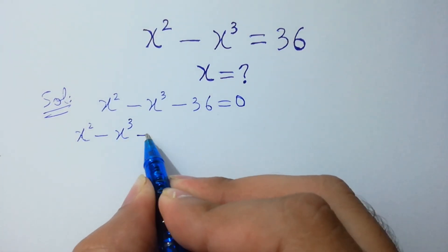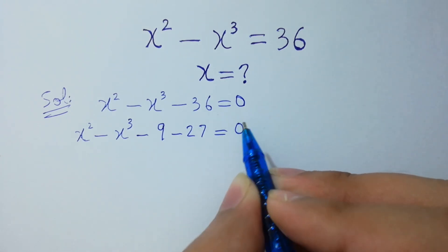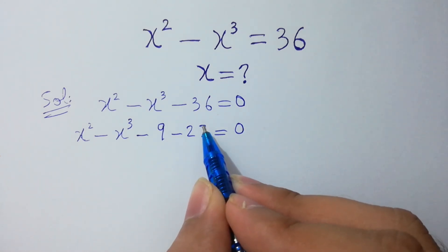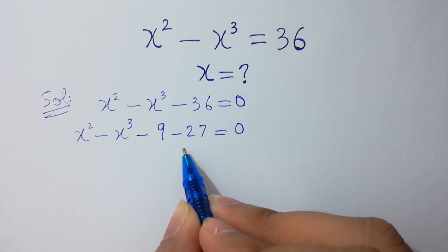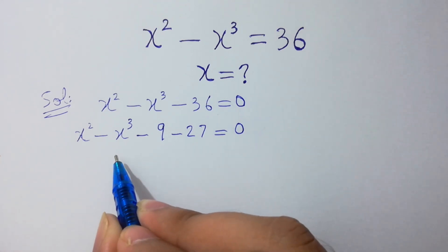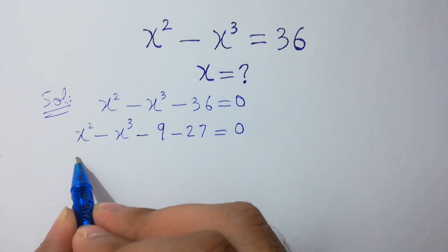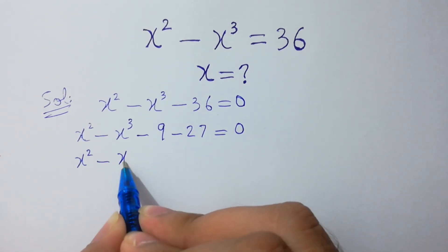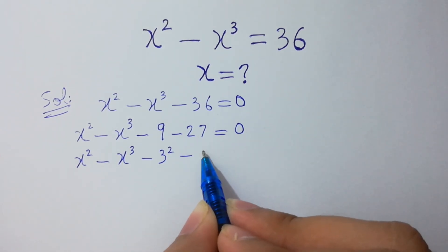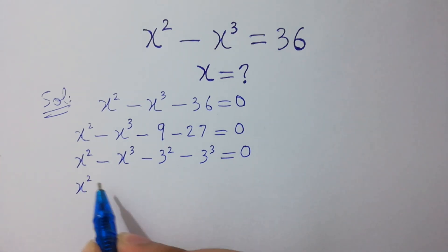I can write minus 36 as minus 9 minus 27, equal to 0, since 9 and 27 sum to 36. I used these because there is x squared — 9 is 3 squared — and x cubed — 27 is 3 cubed. So: x squared minus x cubed minus 9 minus 27 equals 0.